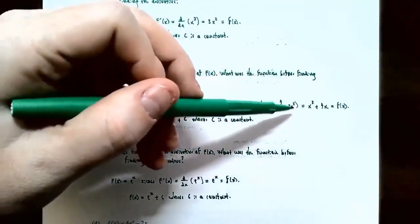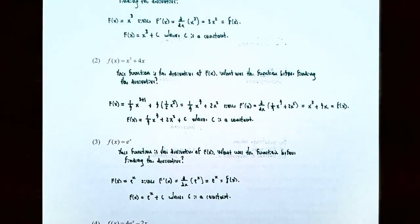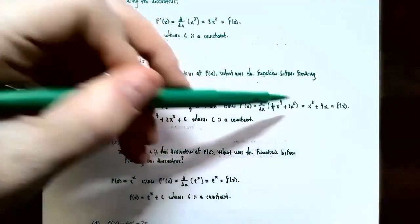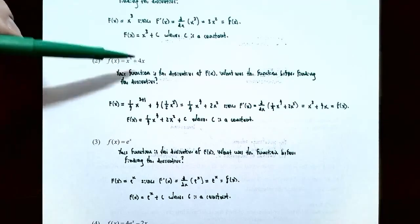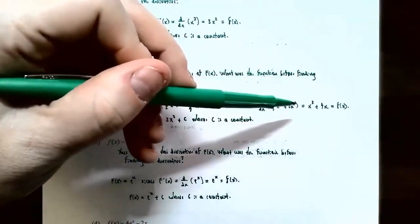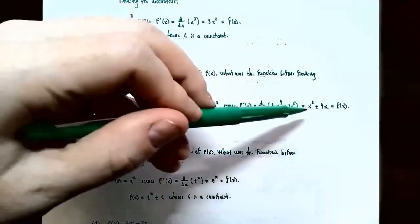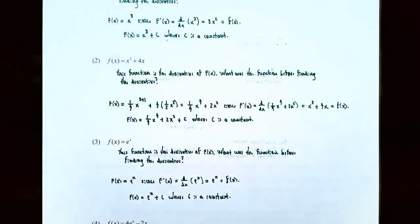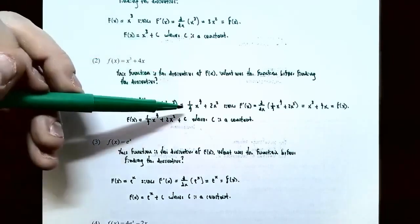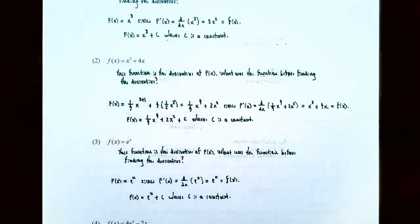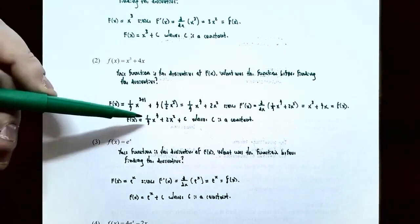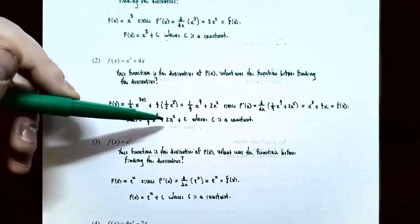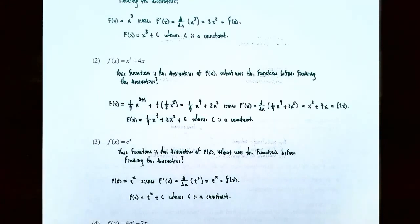The derivative of 2x squared: using the power rule, 2 times 2 gives 4, and subtracting 1 from the power gives 4x. This matches the original function, confirming capital F of x is an antiderivative. So capital F of x equals one-fourth x to the fourth plus 2x squared, and the family of antiderivatives is capital F of x equals one-fourth x to the fourth plus 2x squared plus c, where c is a constant.